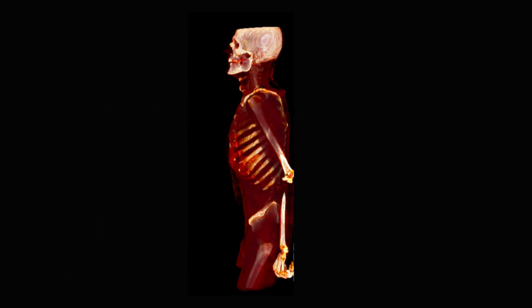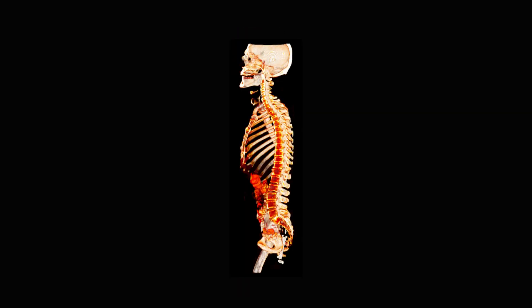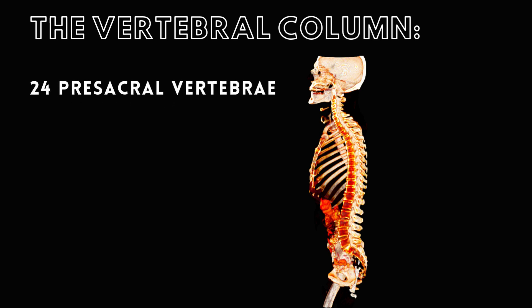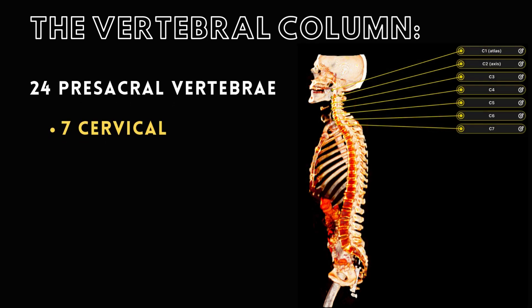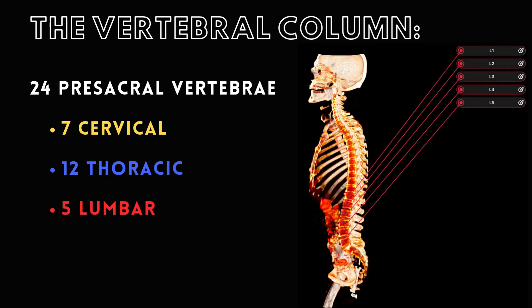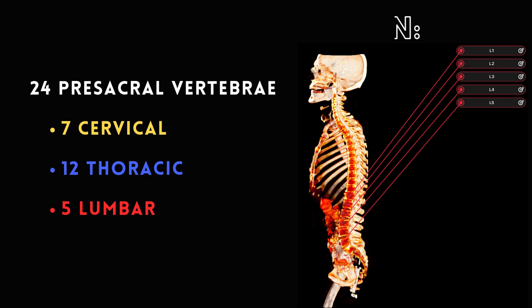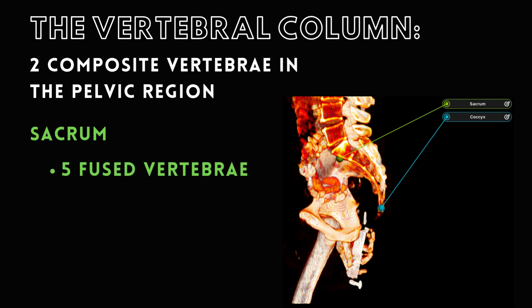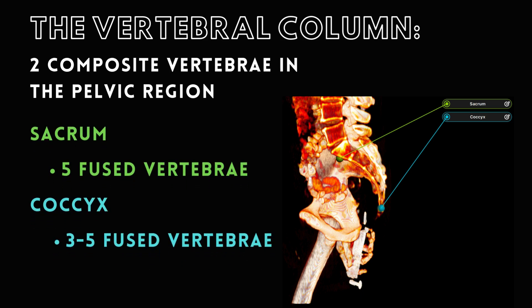Let's create a cross-section on a real patient scan using BodyViz to visualize the vertebral column. There are 24 presacral vertebrae: 7 cervical, 12 thoracic, and 5 lumbar. Two composite vertebrae are located in the pelvic region — five vertebrae are fused to form the sacrum, and 3 to 5 coccygeal vertebrae are fused to form the coccyx.